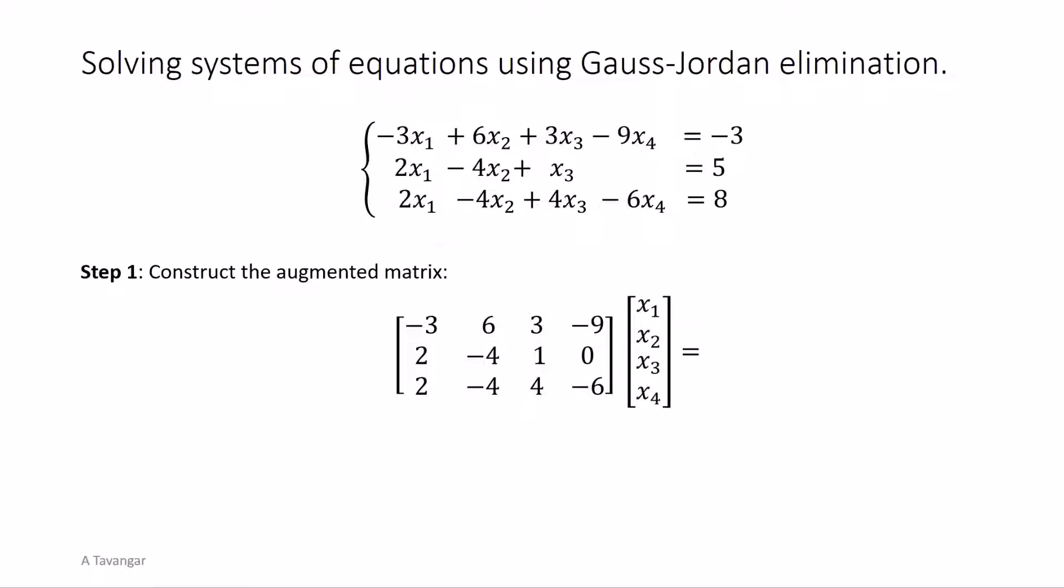On the right hand side we will have the matrix of constants of the equations. The matrix on the left is called the coefficient matrix and the matrix on the right is called the constant matrix. Now if you combine these two matrices into one, the resulting matrix is called the augmented matrix. Notice that this matrix has exactly the same information as the original system. The coefficients from one equation of the system create one row of the augmented matrix.